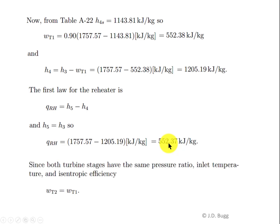For the second turbine, notice that the pressure ratio across both turbines is the same (5), the inlet temperature into both turbines is the same (1600 K), and the isentropic efficiency is the same. Therefore the work per unit mass of the second turbine equals that of the first turbine: W_T2 = 552.38 kJ/kg.